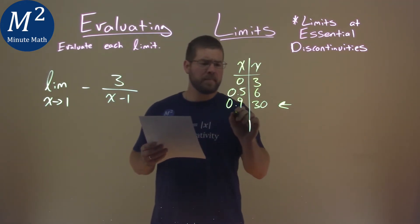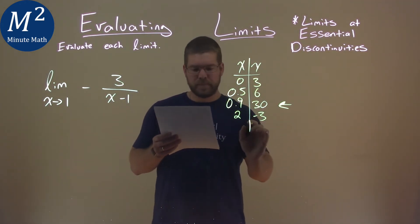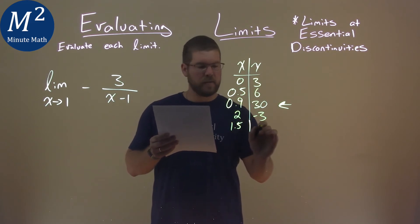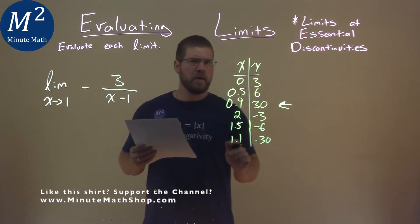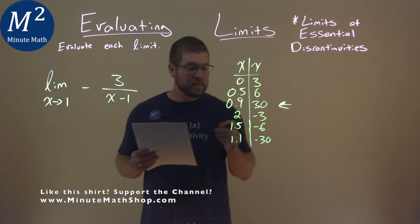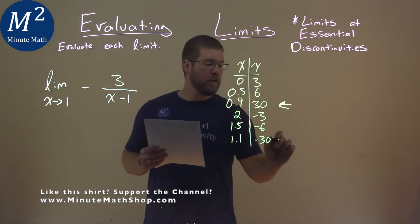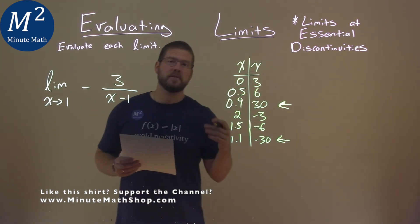But what about from the right? Put 2 in for x, we get negative 3. Put 1.5 in for x, we get negative 6. Put 1.1 in for x, we get negative 30. So if we approach 1 from the right, as we get closer to 1, we're going towards negative infinity.